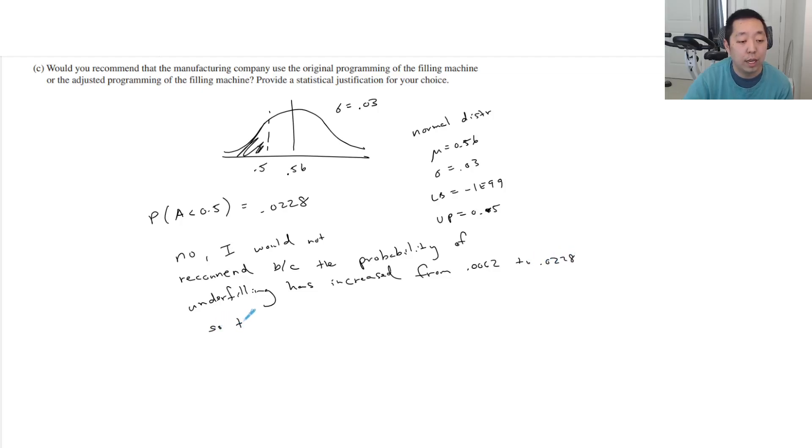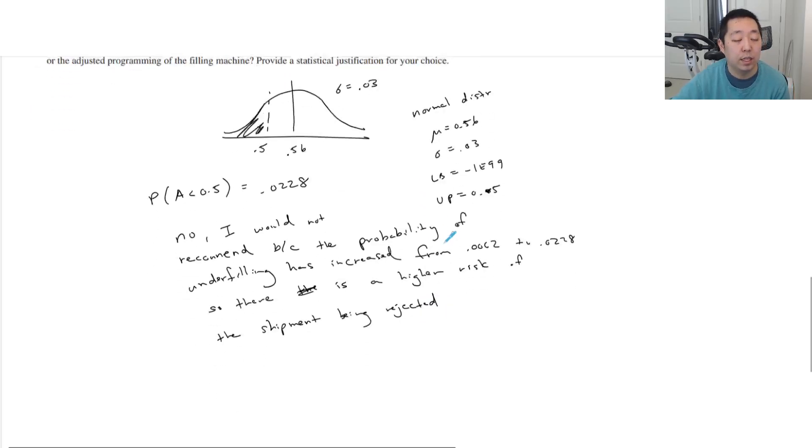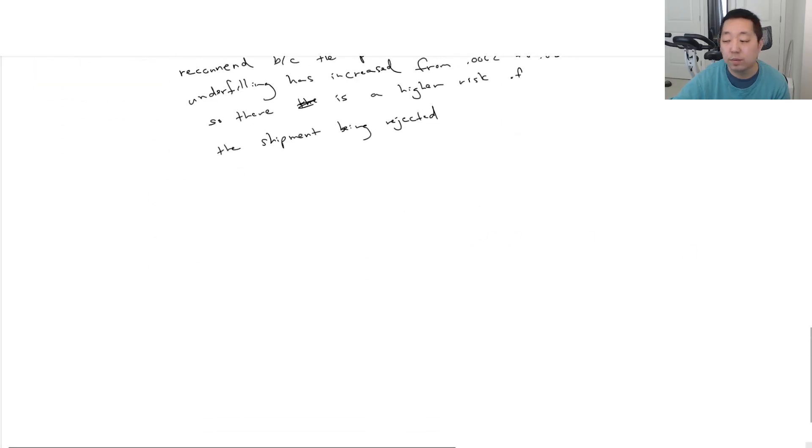So there's a more likely chance it'll be rejected. There is a higher chance of the shipment being rejected. So that's all you're really looking at, just the higher probability. That's the statistical justification. Alright.